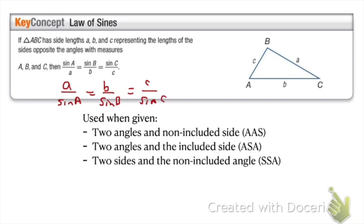We use the Law of Sines if we are given one of three things: two angles and a non-included side (angle-angle-side), two angles and the included side (angle-side-angle), or two sides and a non-included angle (side-side-angle). Law of Sines is relatively easy, and now I will show you how we apply it.